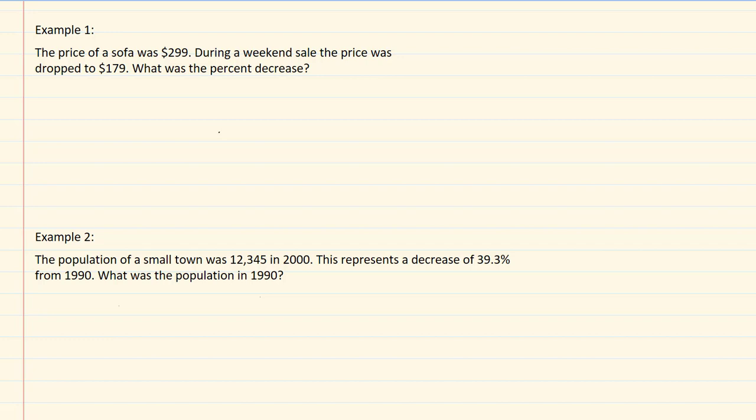So this was the scenario where we have the initial and we have the final. So we're going to take the difference between those, 299 minus 179, over our initial value which is 299, that will equal x over 100.